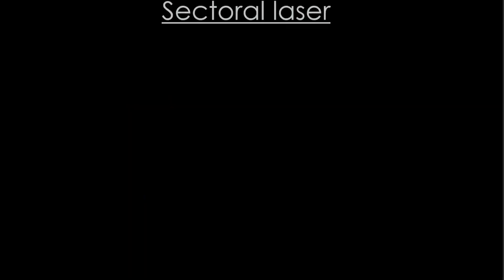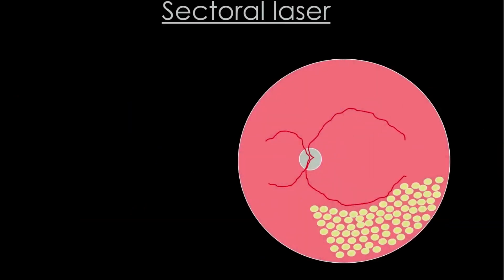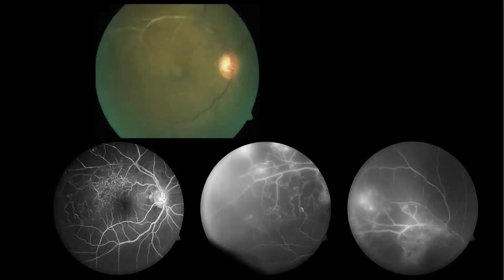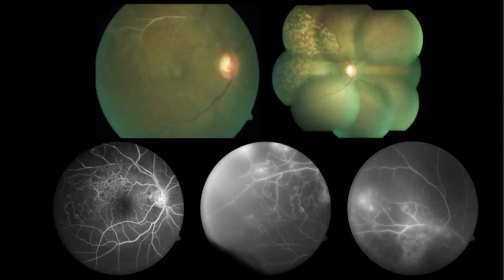Sectoral laser is simply scatter laser confined to one quadrant of the retina, with the same parameters as PRP. It is done in conditions with localized neovascularization, such as retinal vein occlusion, retinopathy of prematurity, vasculitis, and radiation retinopathy. Ideally it should be done under fundus fluorescein angiography (FFA) guidance. FFA shows the areas of new vessels and capillary non-perfusion, helping to accurately place the laser marks.